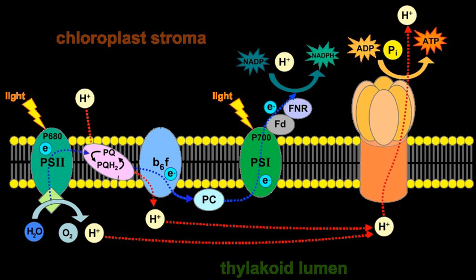In photosynthesis, the light-dependent reactions take place on the thylakoid membranes. The inside of the thylakoid membrane is called the lumen, and outside the thylakoid membrane is the stroma, where the light-independent reactions take place.